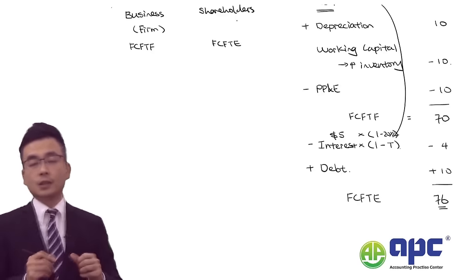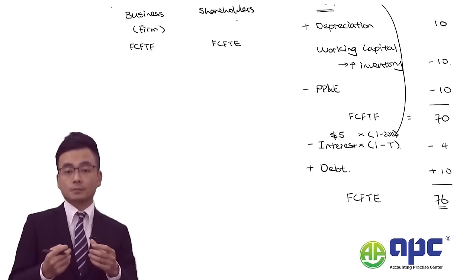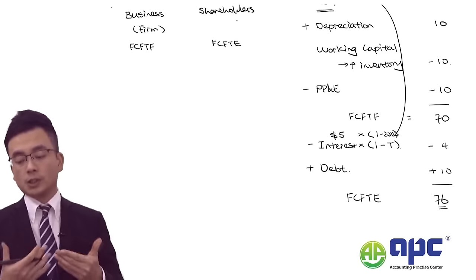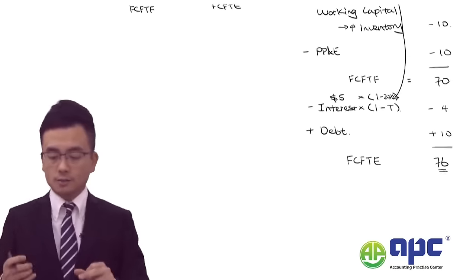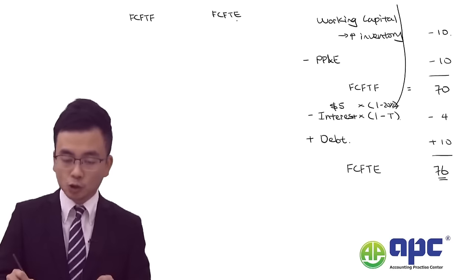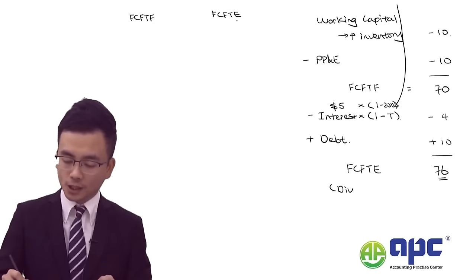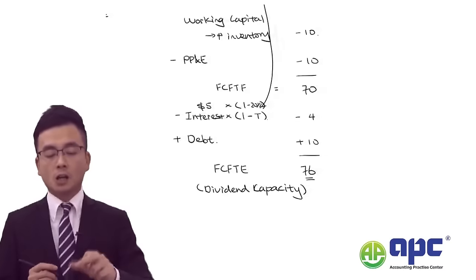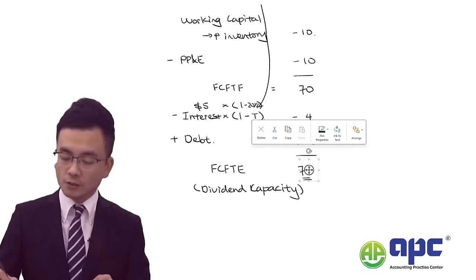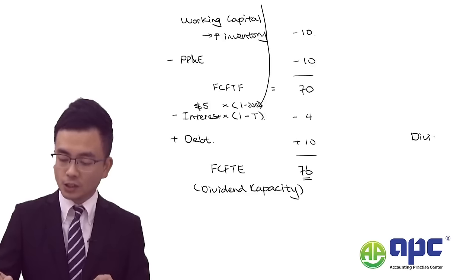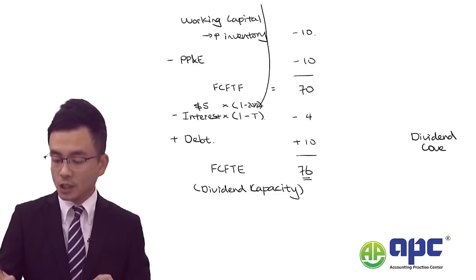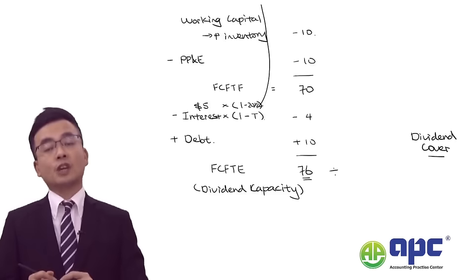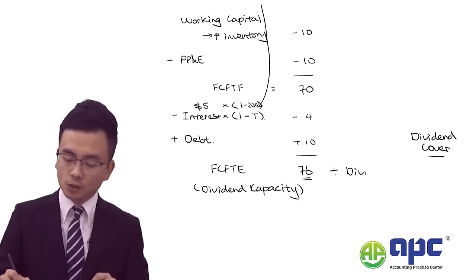The cash flows available only to equity holders will be $76. In exams, free cash flow to equity is sometimes known as dividend capacity — the ability to pay dividends to shareholders. To calculate dividend cover, use free cash flow to equity divided by the dividend paid. If dividends paid are $7.6, then dividend cover = 76 / 7.6 = 10 times.